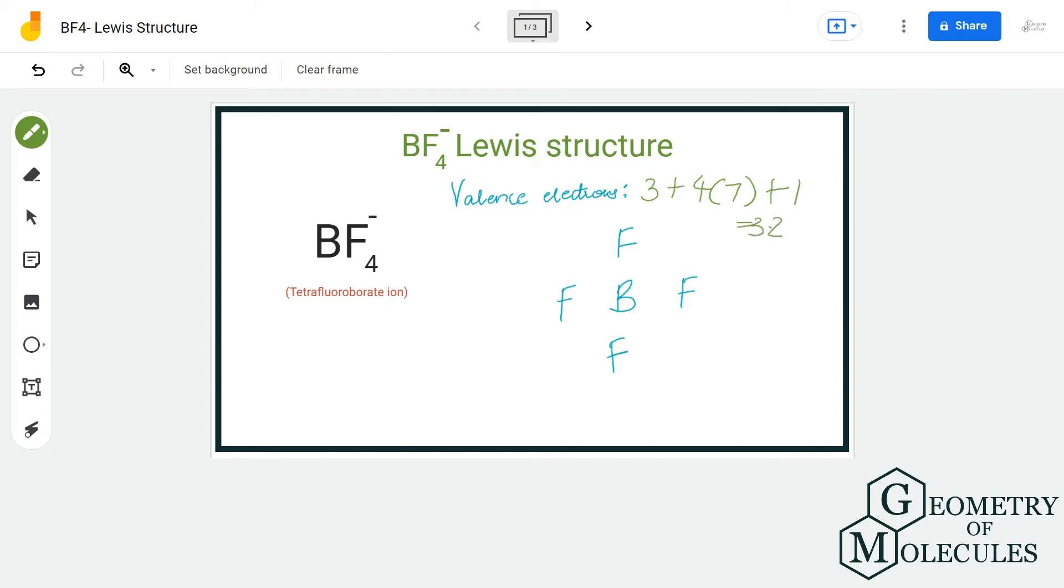Now, once we know the number of valence electrons, it becomes relatively easy to place atoms and electron pairs for showing bonds. Boron atom will take the central position and all the fluorine atoms will be arranged around it like this.